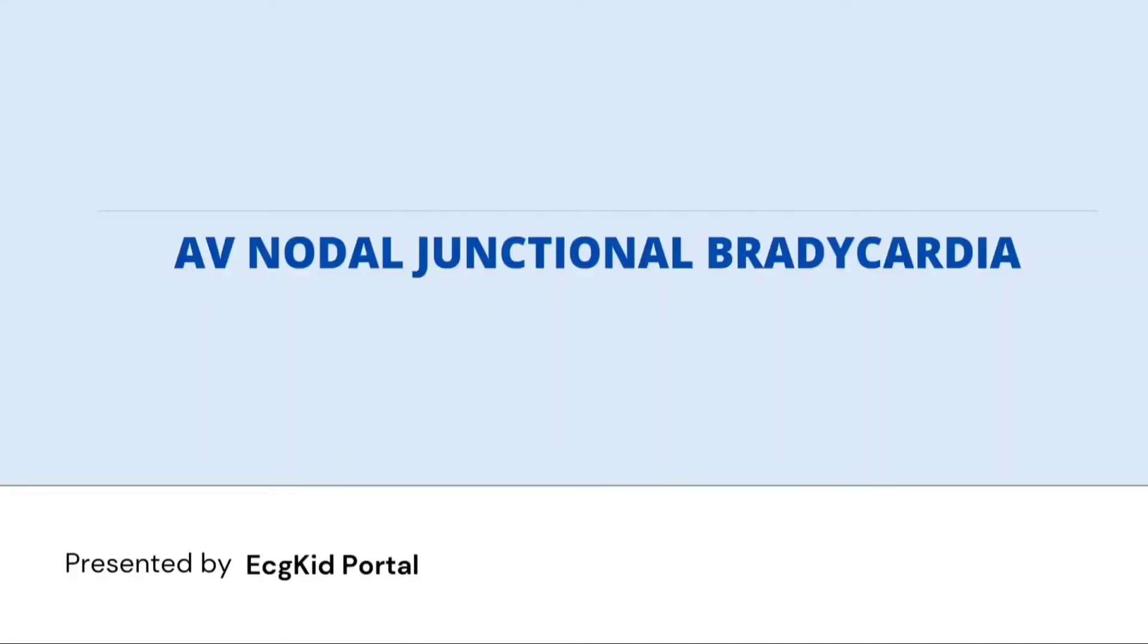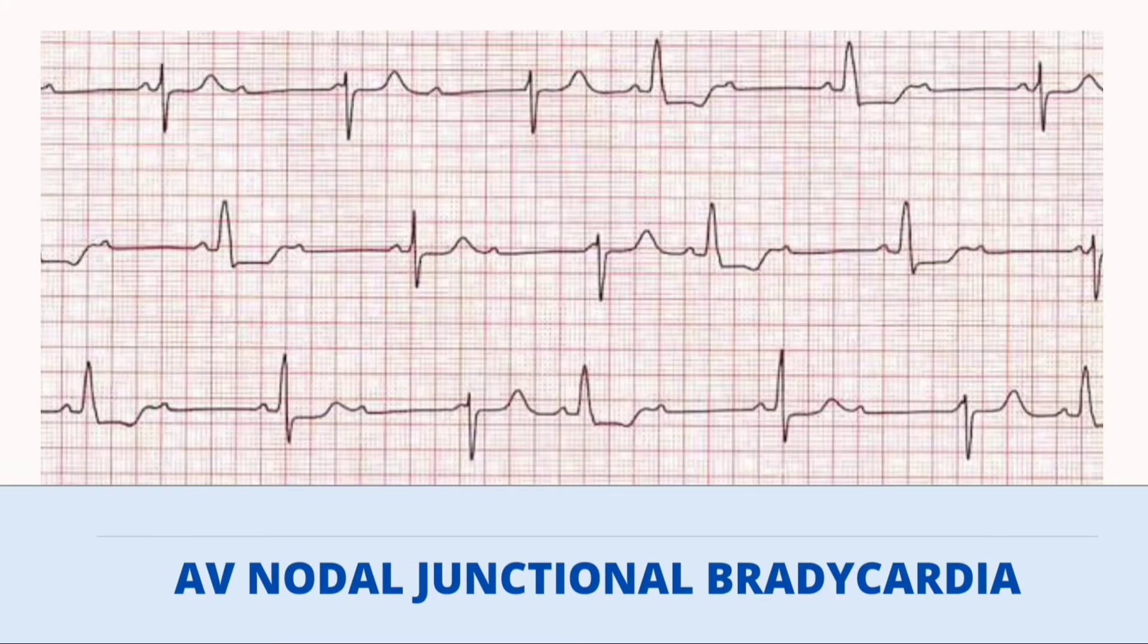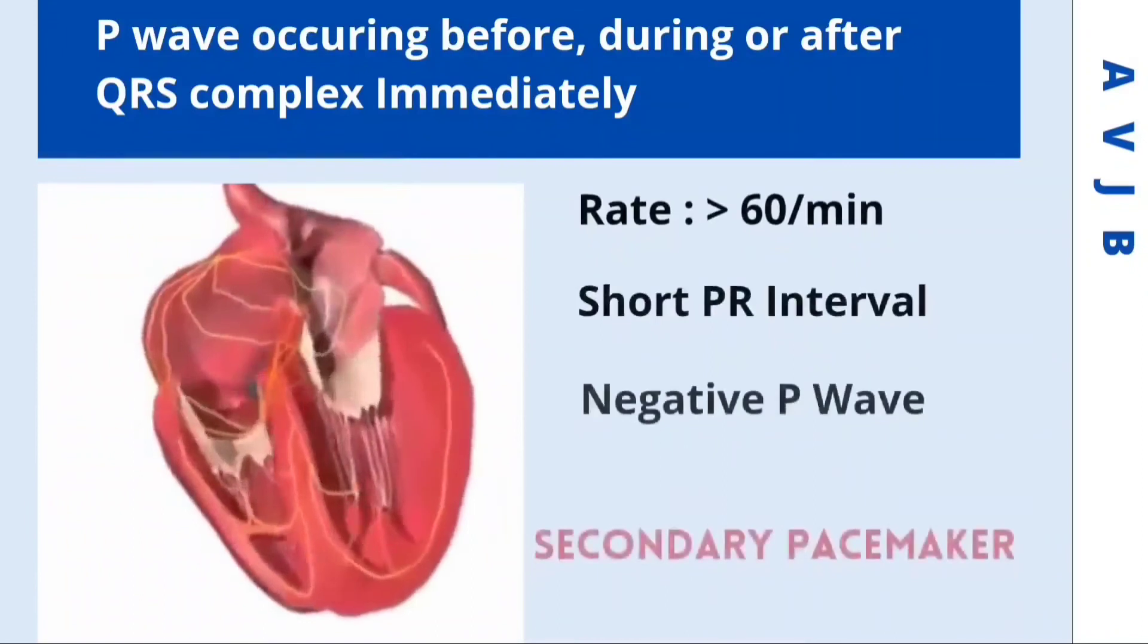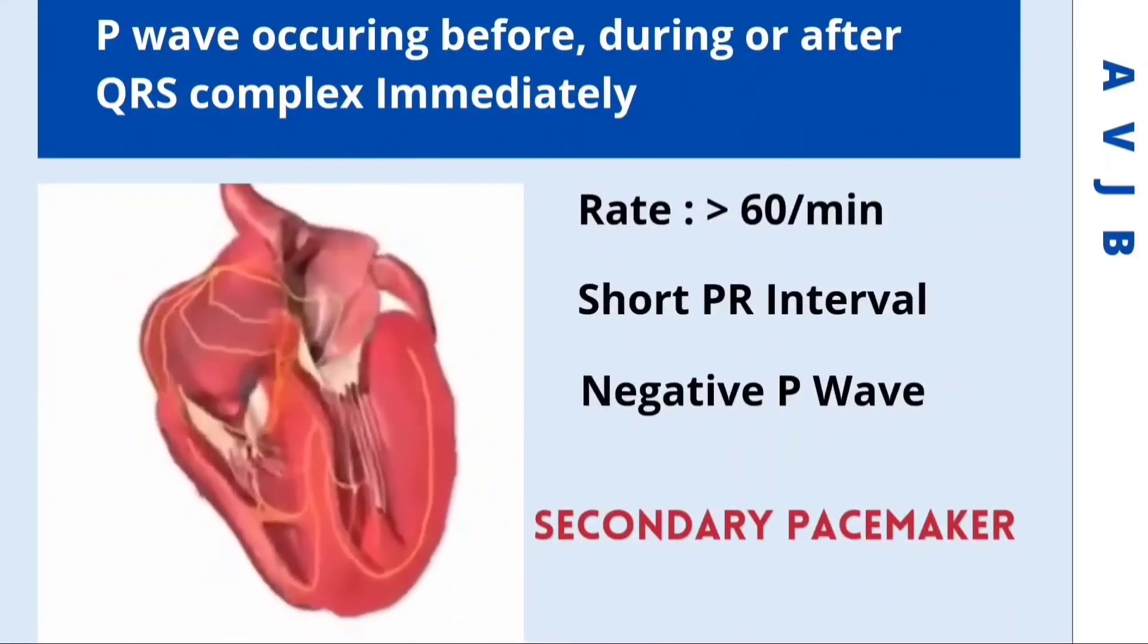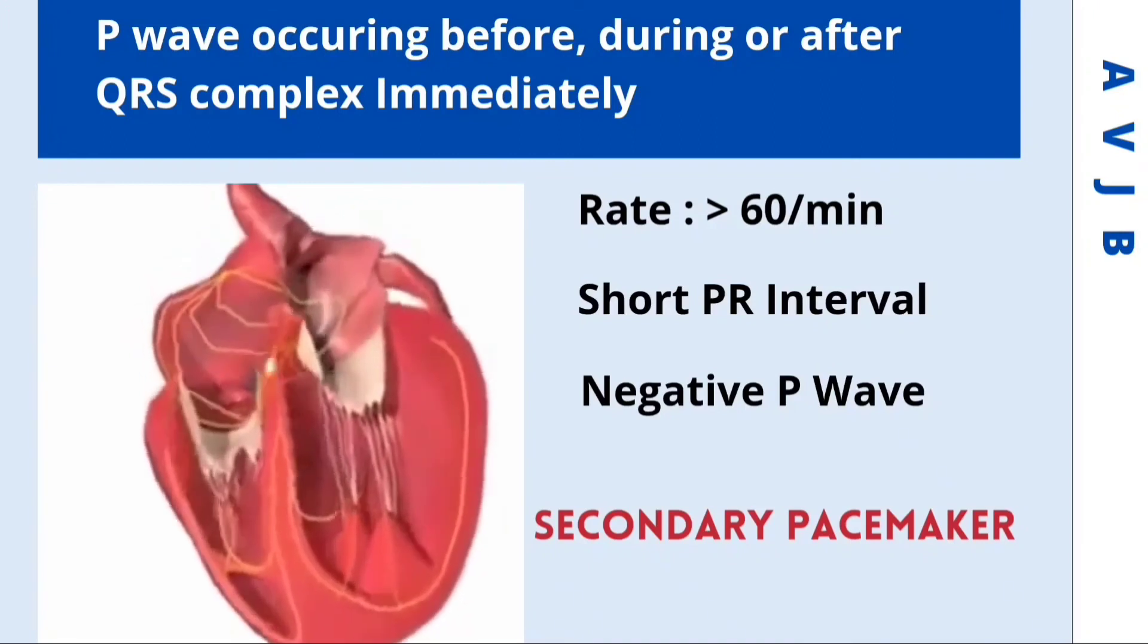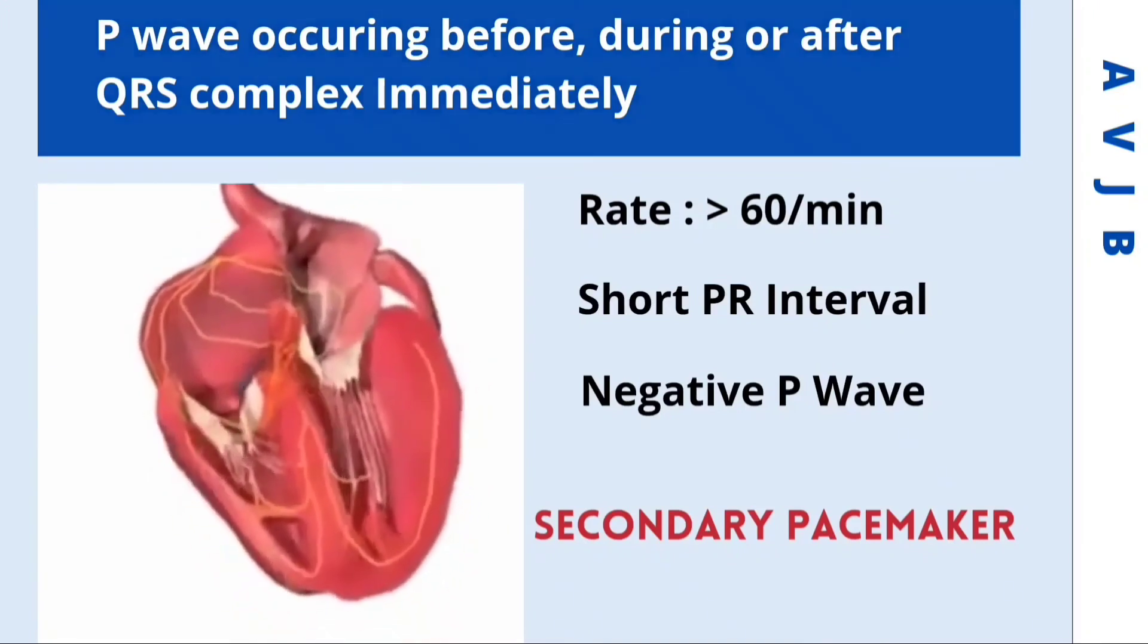AV junctional bradycardia is characterized by QRS complexes of AV nodal origin that occur at a regular rate of less than 60 per minute. These represent a secondary pacemaker and may have inverted P wave vectors in leads II, III, and aVF that occur immediately before, during, or after the QRS complex with a short PR interval.